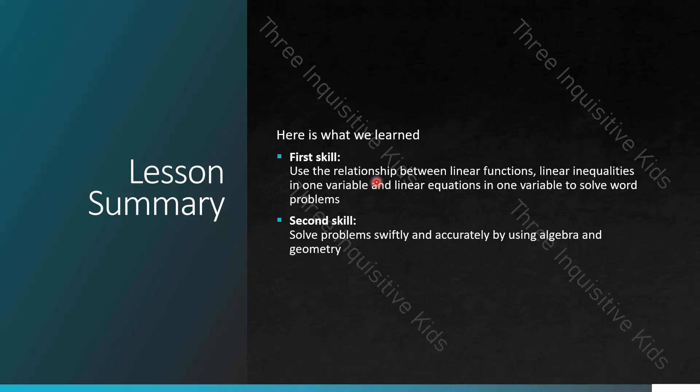To recap, the two skills we focused on today are: using the relationship between linear functions, linear inequalities in one variable, and linear equations in one variable to solve word problems; and solving problems swiftly and accurately by using algebra and geometry. If you learned something new, please hit the like button and comment below. Share this with friends or family, and subscribe and hit the notification bell for more videos like this.